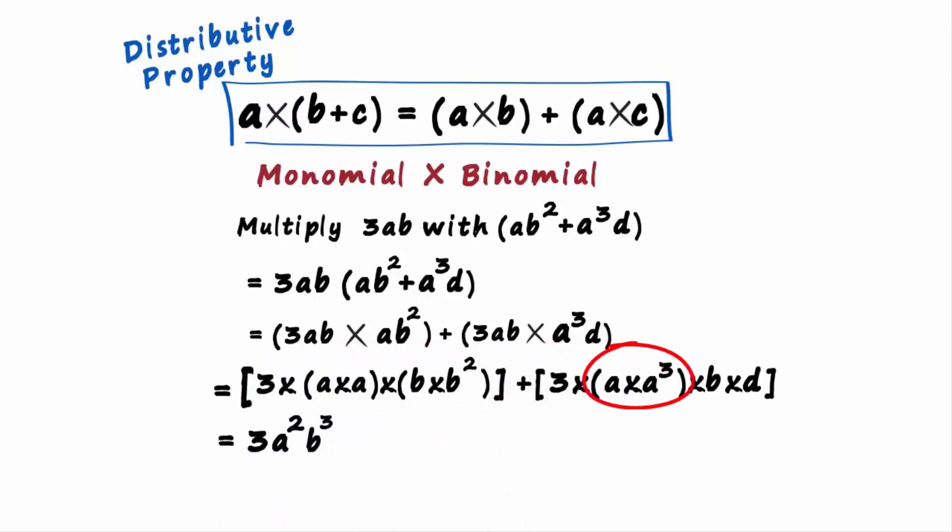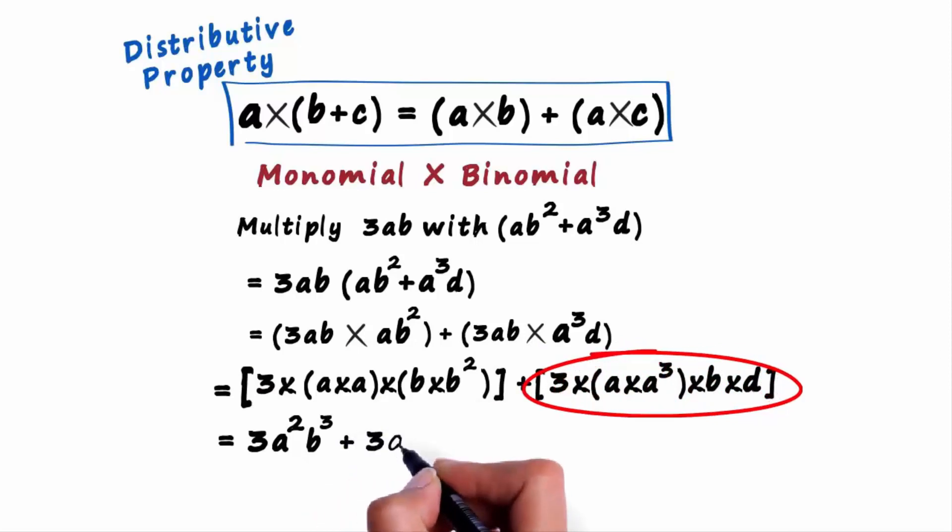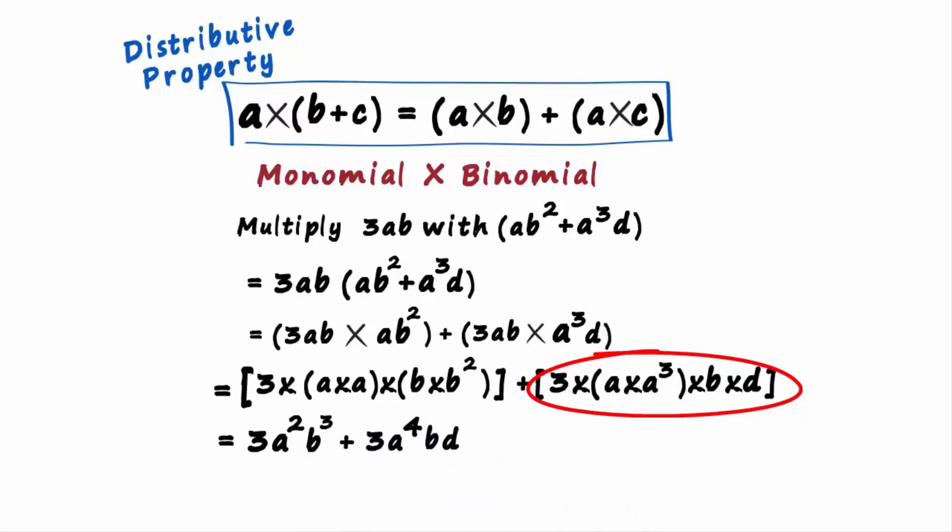This product will be a raised to 4, and this here will just be bd. This part can be written as 3a raised to 4 bd. This product was reduced to this expression.